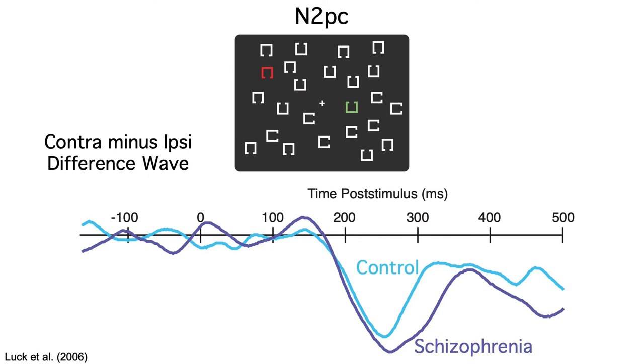This plot overlays the data from the schizophrenia and control groups, averaged across attend red and attend green. You can see that the onset time of the N2PC is essentially identical in the two groups. We concluded that schizophrenia does not slow down the process of finding the target and shifting attention to it.